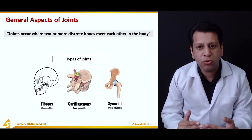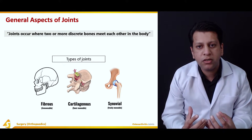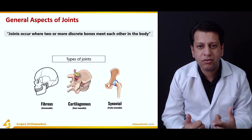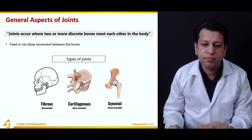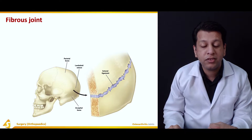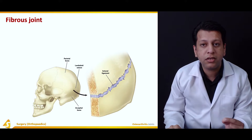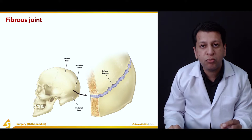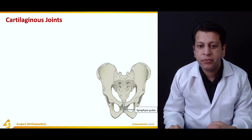Synovial joints are where free movement actually takes place. They are called synovial because they have a capsule containing synoviocytes, which create synovial fluid that lubricates the joints. Coming back to fibrous joints, a classical example is the lambdoid suture between the parietal and occipital bones — these sutures do not allow any movement. Fibrous joints join bone or cartilage by fibrous tissue and allow very little movement. Coming to cartilaginous joints, they allow very little but some degree of movement.